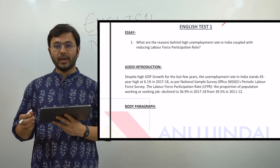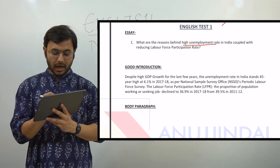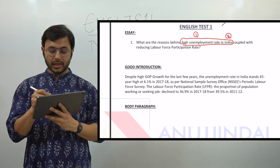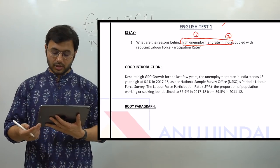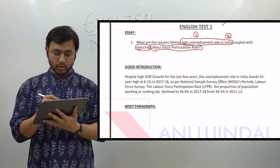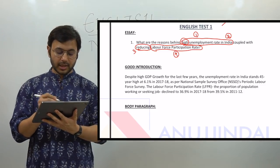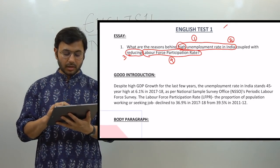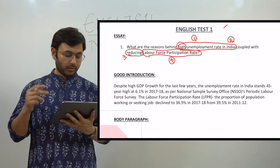The first essay topic I am going to discuss is: what are the reasons behind high unemployment rate in India, coupled with reducing labor force participation rate? The first thing you do when you start reading an essay topic is identify the keywords. Here we have: high unemployment rate, India specifically, and reducing labor force participation rate. The unemployment rate is increasing while LFPR is reducing — they are going in opposite directions.